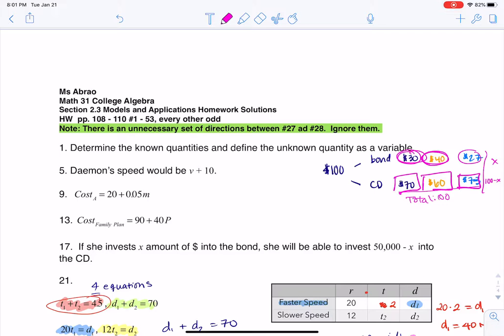So this woman is a high roller, right? She's got $50,000 that she's putting away. So if she puts X dollars into the bond, then she has 50,000 minus X left to put into the CD.